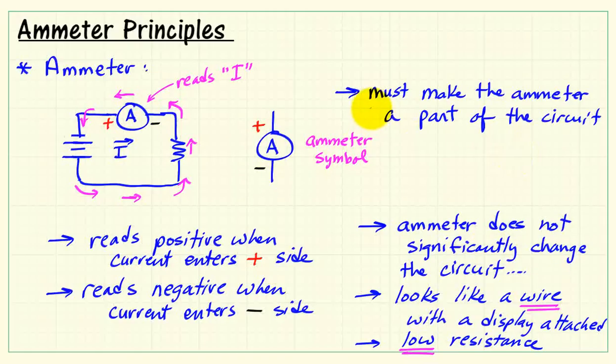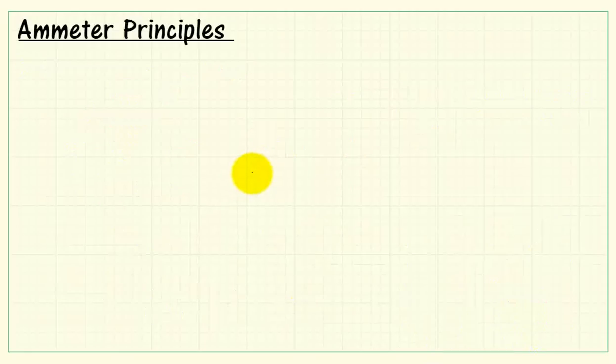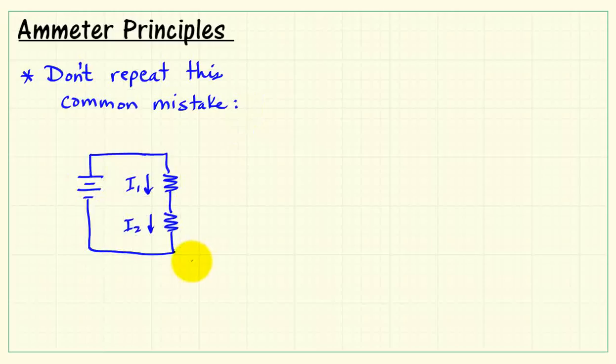Now this is important to make the ammeter a part of the circuit. And what you oftentimes find when people are getting started is they make a pretty common mistake. So let's take a look at this mistake so you don't repeat it yourself.